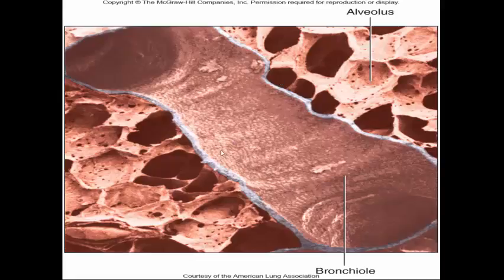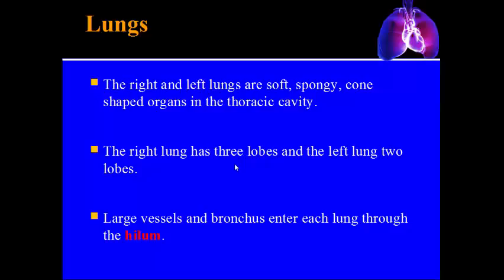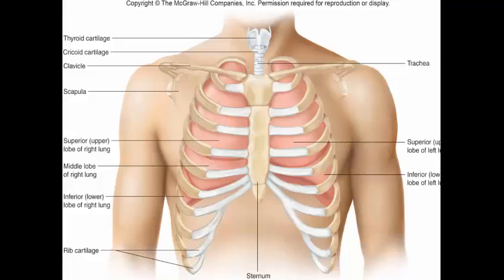The lungs are soft, spongy, and cone-shaped, found in the thoracic cavity. The right lung has three lobes and the left lung has two. Major blood vessels, lymphatic vessels, and nerves enter each lung through an area called the hilum — an indented region where vessels enter a structure. The term hilum is general and will also be seen when discussing the kidney in a future chapter.